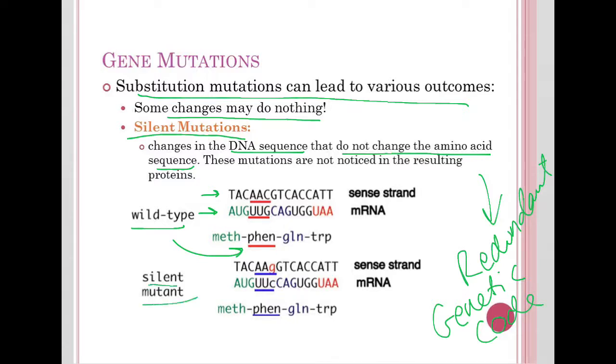Here's the silent mutation where that C was turned to a G, which in turn changed our RNA sequence. However, UUG and UUC both code for phenylalanine. You still end up getting the exact same amino acid sequence, therefore the exact same protein, and you will never know that you had this mutation. That's a silent mutation.